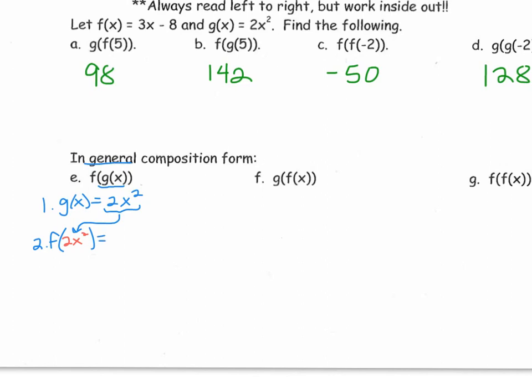So now it's going to be f of 2x squared, instead of just plain x. So when you see that on the left, that means wherever you see x in the f of x function, you plug in that parentheses.